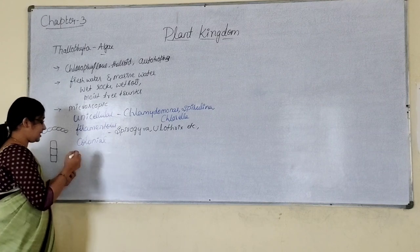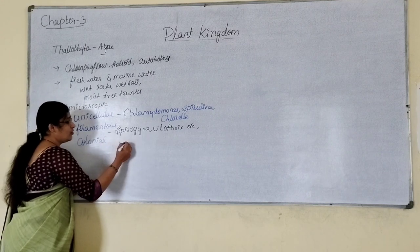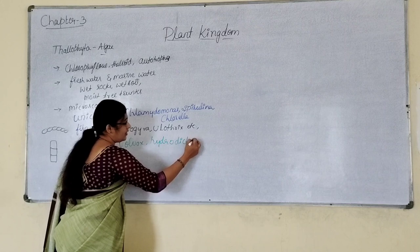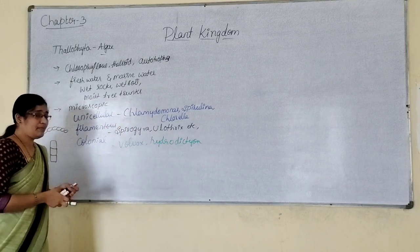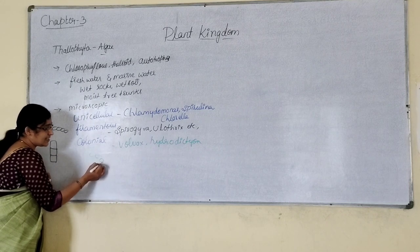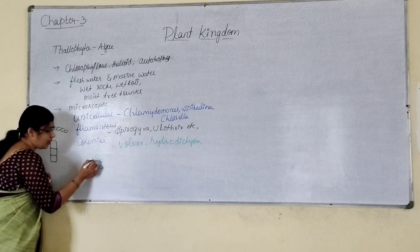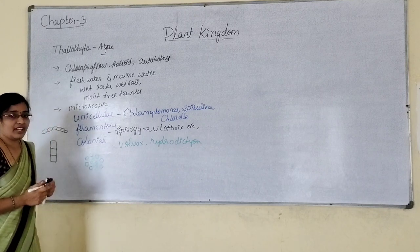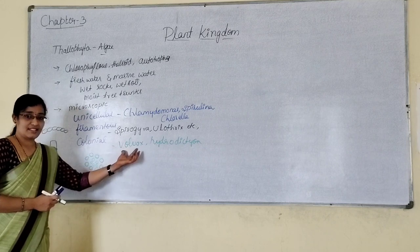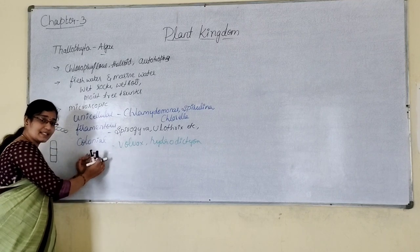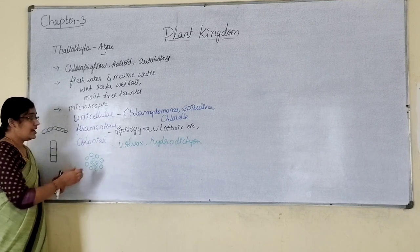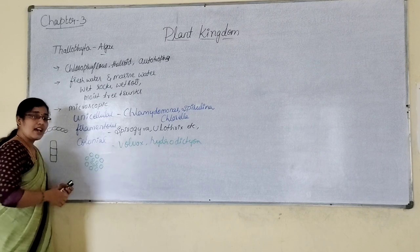In some other cases, like Volvox and Hydrodictyon, the cells are arranged to form colonies. These cells are concentrated at a place to form a colony, and that is called colonial algae. Examples are Volvox as well as Hydrodictyon.